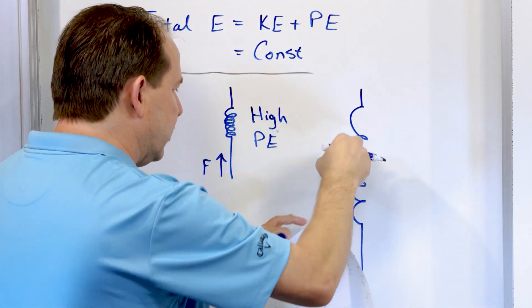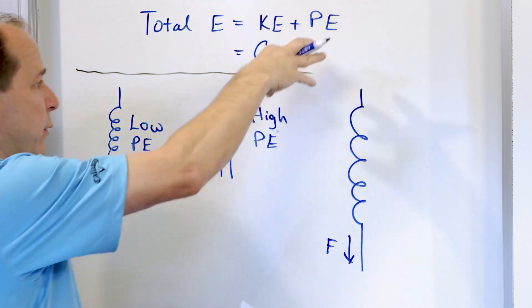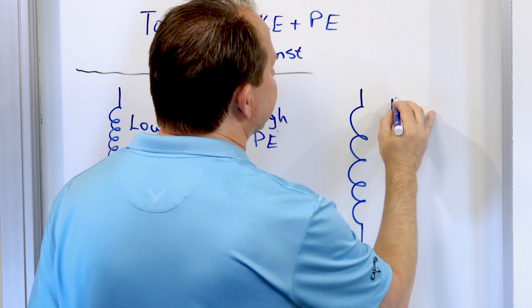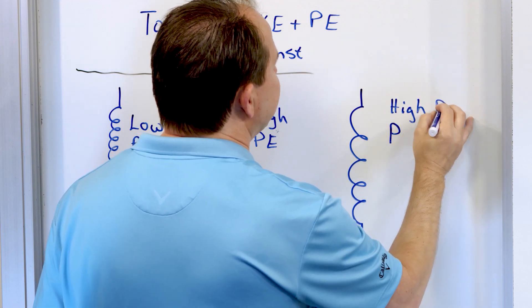Now what if we go the other way? Instead of compressing the spring, what if we expand the spring like this? We stretch it out like this. Well, same thing, I do that, but the opposite direction, I pull it in the opposite direction, but when I let it go, it's going to bounce back. So it has the potential to do some kind of work. So we're going to call this, again, high potential energy.